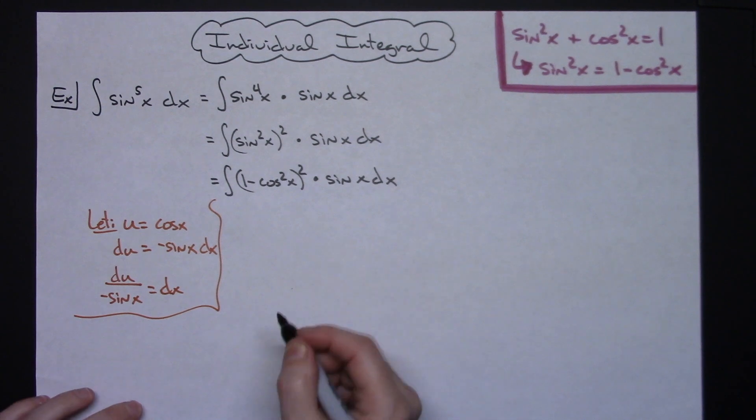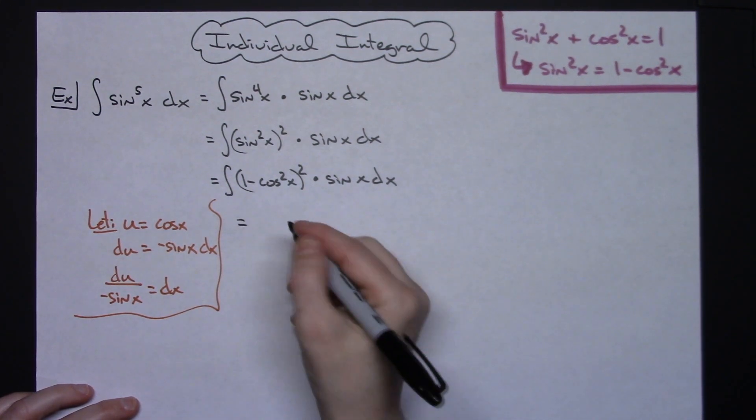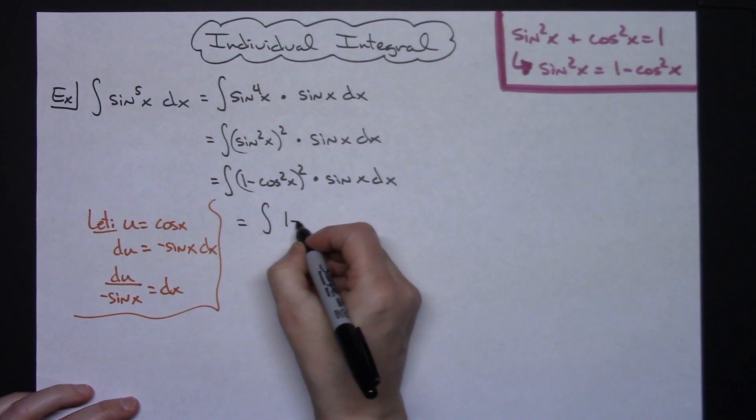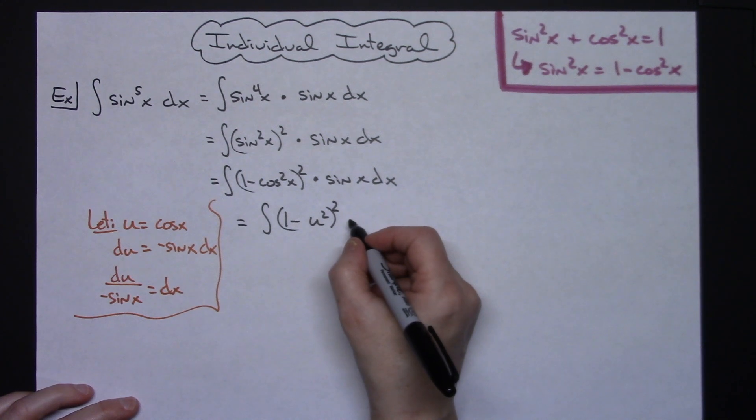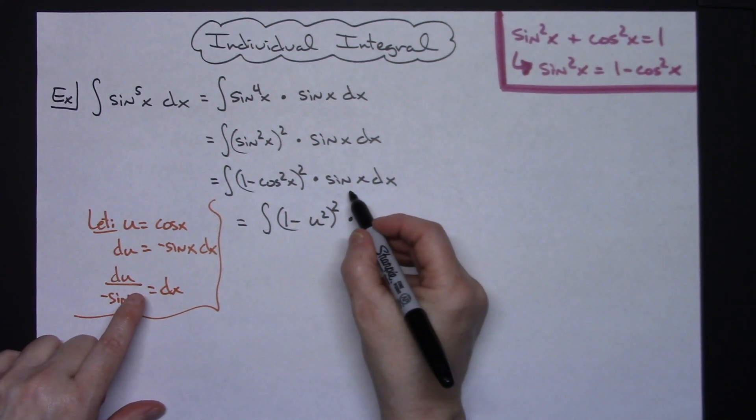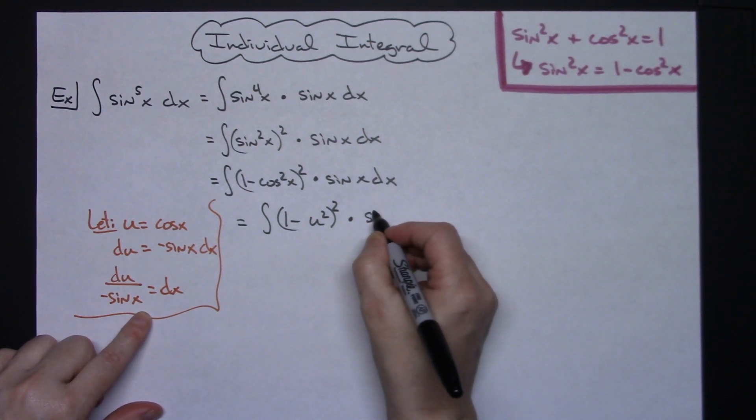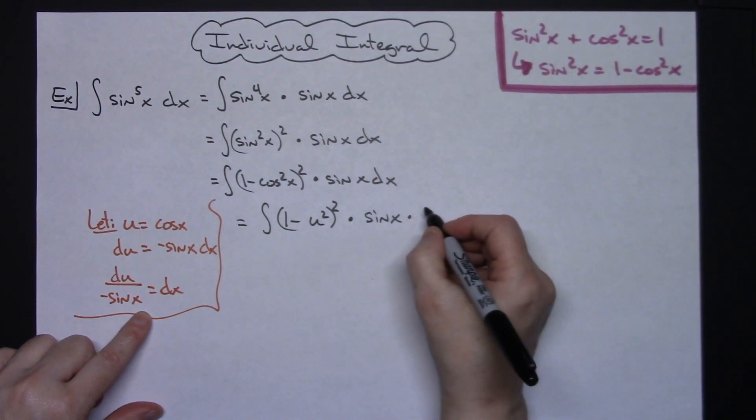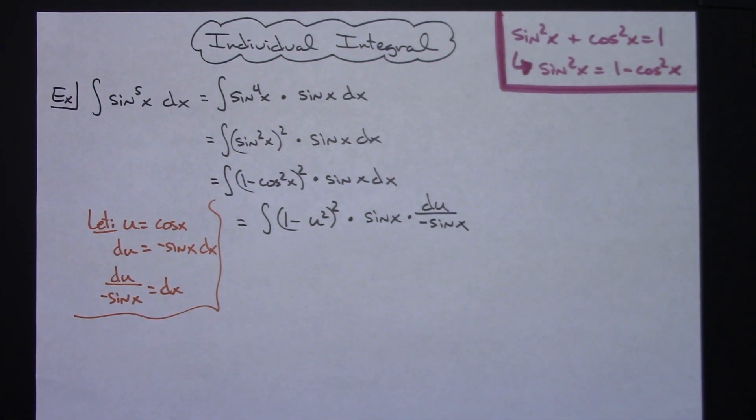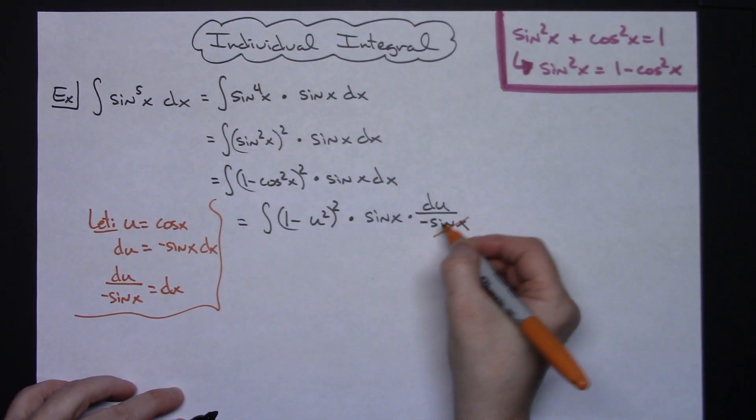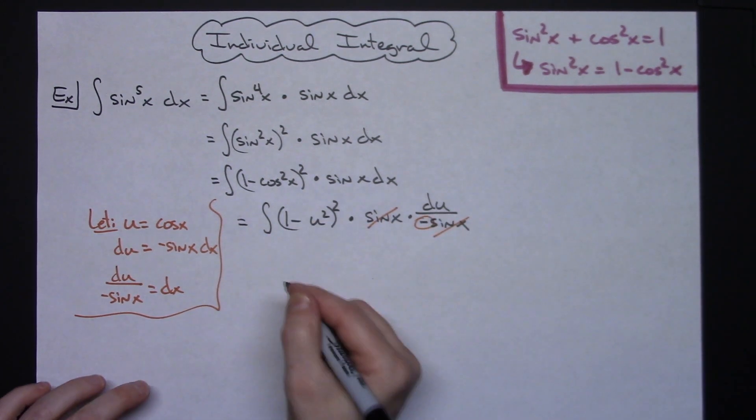Now from there we can come back in and substitute in our u value. So we'll have the integral of one minus u squared quantity squared and then changing the dx to what it equals, we'll have that sine x that's still there and then the du over minus sine x. What that's going to allow me to do is cross out those sine x's and take that negative and pull it out in front.